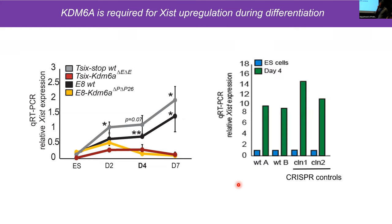We also looked at CRISPR controls. When we compared CRISPR controls and wild-types at day 4 versus ES cells, we saw — similar to wild-types — a robust upregulation of XIST in the controls, even though they went through the CRISPR process. Since these controls do not have a deletion in KDM6A, this suggests that the changes in XIST are due to the knockout and not the CRISPR process itself.